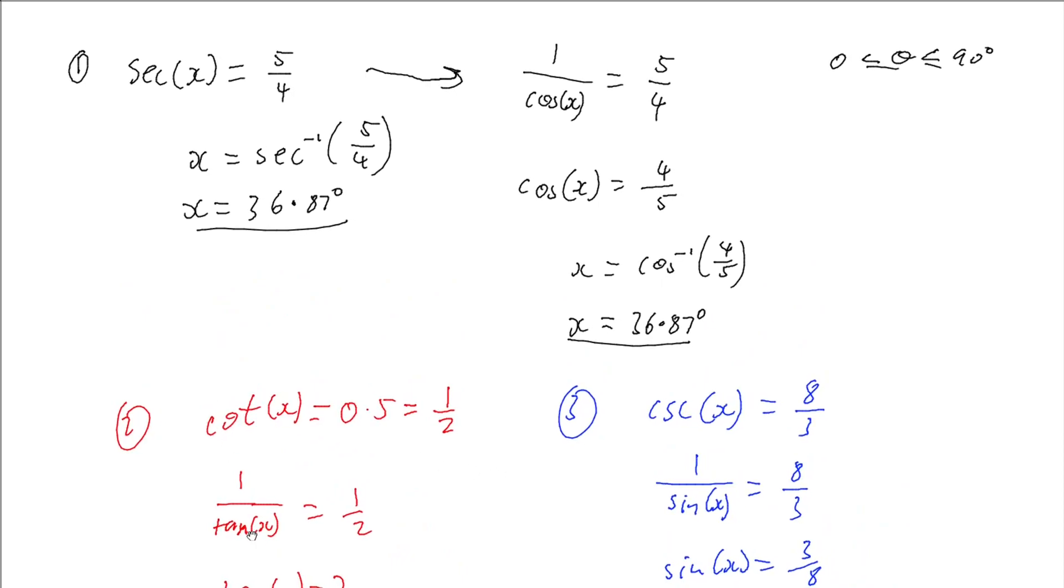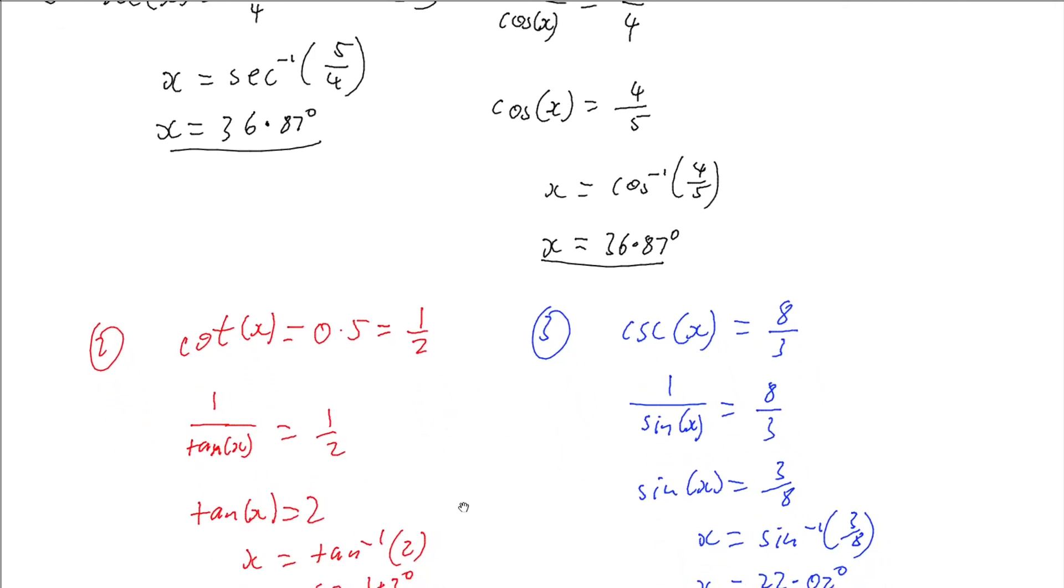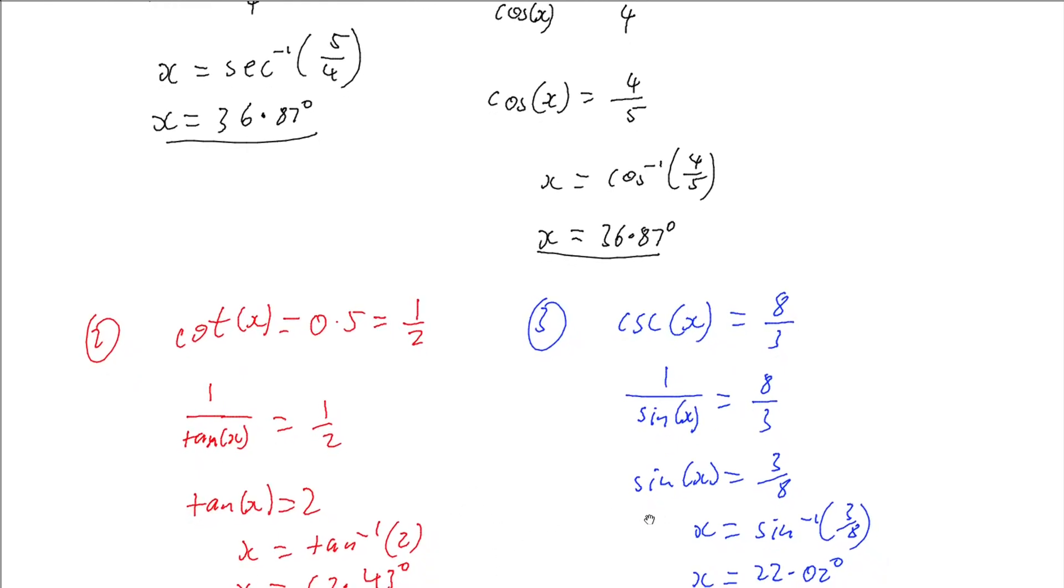it's easy to think about writing the reciprocal function as the reciprocal of the original, sorting out the algebra so that you get that original trig function on its own, and then just find the inverse of that.